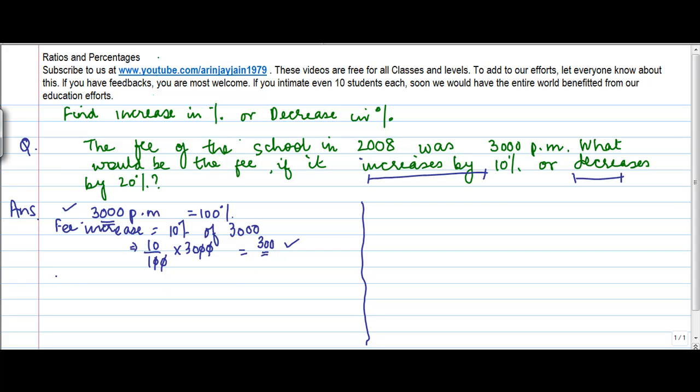So the total fee for the current year will be 3000 plus 300 is equal to 3300, right? So what I did was I took my original fees, I added the increase to it and I got my revised fees. This is basically method one of doing it. What's the second method?